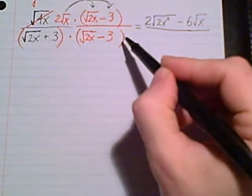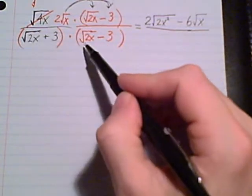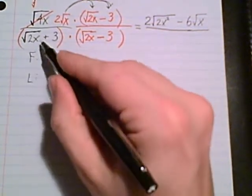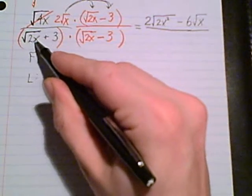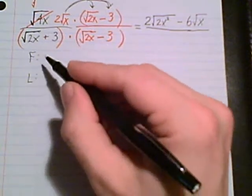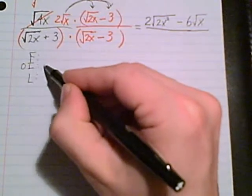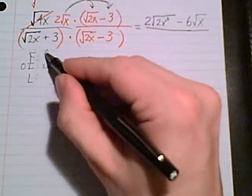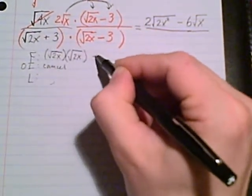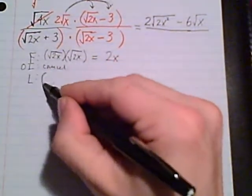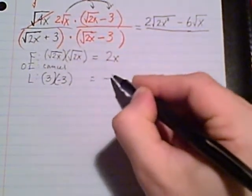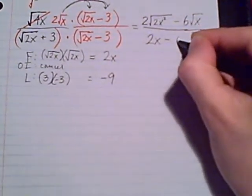Okay, denominator is going to be FOIL, but I know that they are conjugates. So I'm going to skip outer and inner this time. I'm only going to multiply first and last. Because they are conjugates, they're both radical 2x with a 3, one has a plus, one has a minus. That makes them conjugates. That makes me able to say outer and inner are going to cancel. So first, radical 2x times another radical 2x equals 2x. Last, we have, watch those signs, positive 3 times negative 3, negative 9. There's our denominator, 2x minus 9.